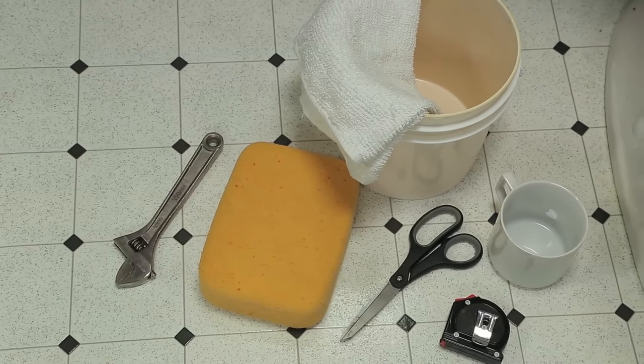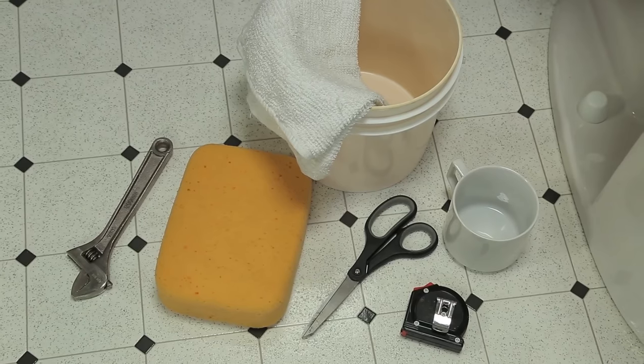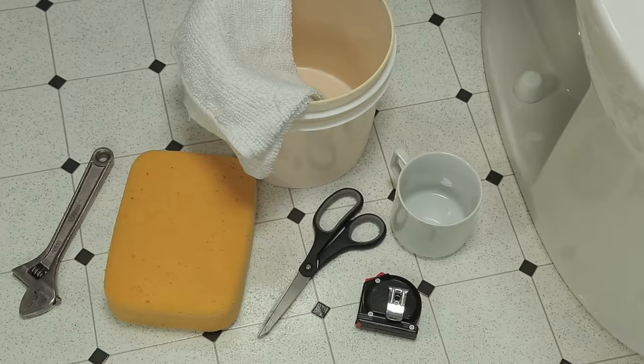In order to install the Performax fill valve, you'll need a wrench, sponge or towel, scissors, measuring tape, a cup or mug, and a bucket or pitcher large enough to hold a gallon of water.